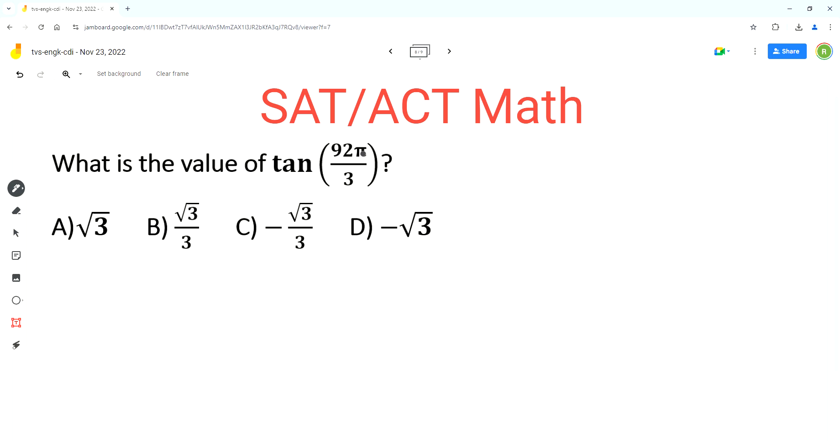of tan of 92π over 3, and we are given these four answer choices. The first step is to analyze the given tan function tan of 92π over 3.